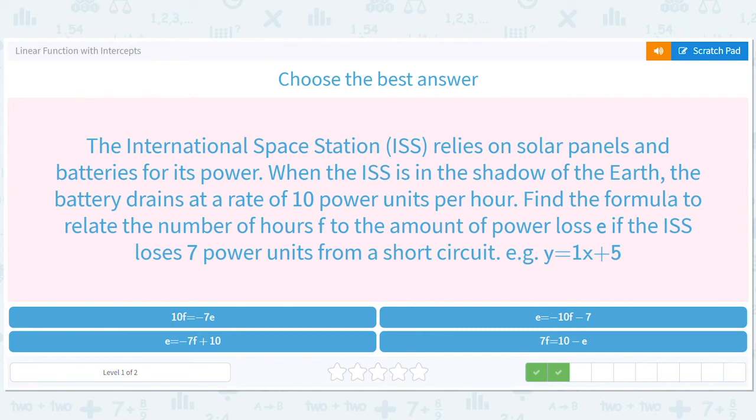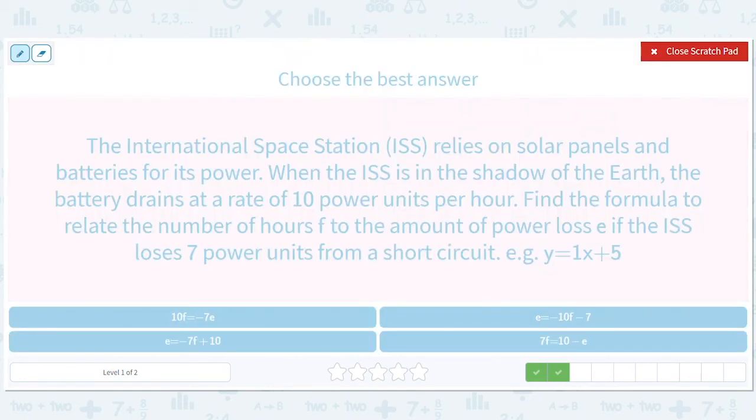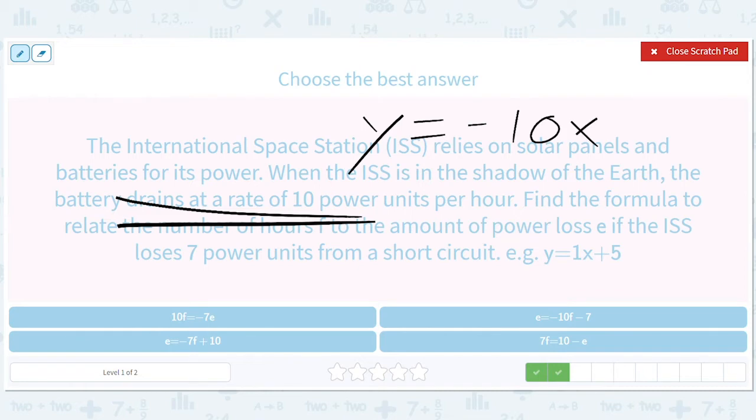The International Space Station relies on solar panels and batteries for its power. When the ISS is in the shadow of the earth, the battery drains at a rate. These are key words for slope. Let's just start with y. Y equals negative 10x. Find the formula, number of hours. If the ISS loses seven to start with, power from a short circuit. So 10x minus seven.